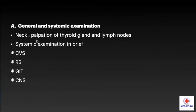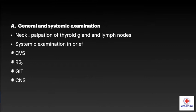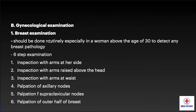Continuing with general and systemic examination: in the neck, we have to look for palpation of the thyroid gland and lymph nodes. In systemic examination, we have to do a brief examination of all systems including cardiovascular, respiratory, gastrointestinal, and CNS.